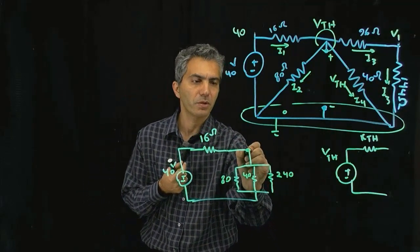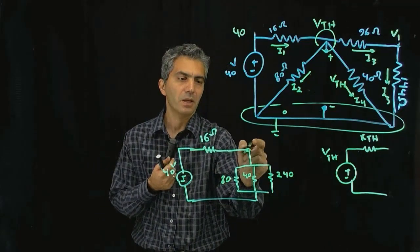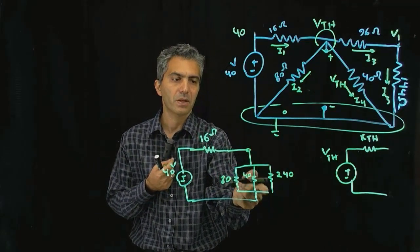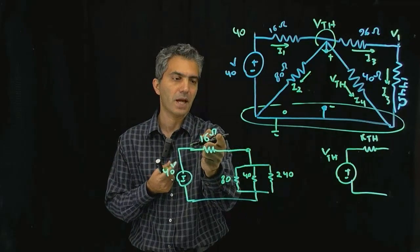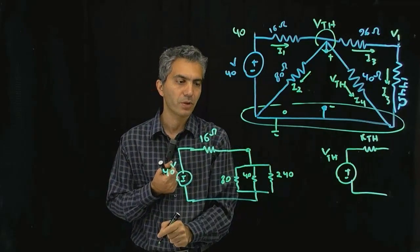The voltage that I'm looking for, the V_Thevenin is right there and therefore that's this resistance divided by these two in series or added to each other multiplied by 40.